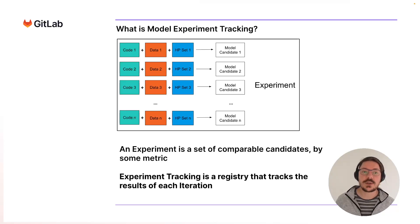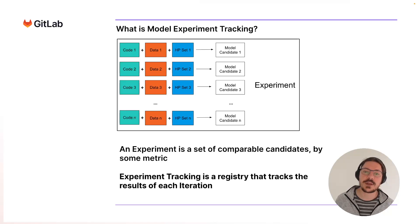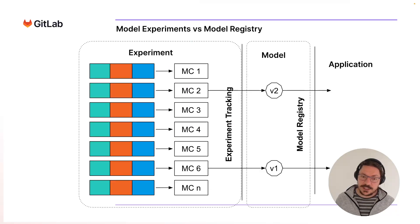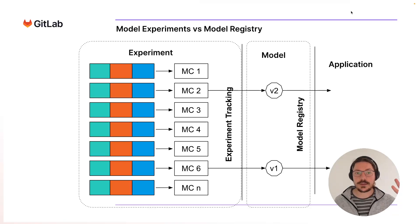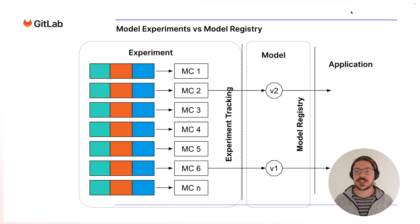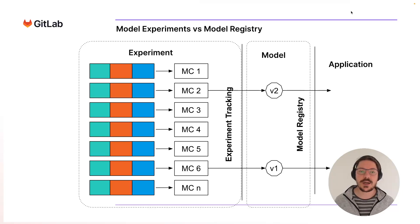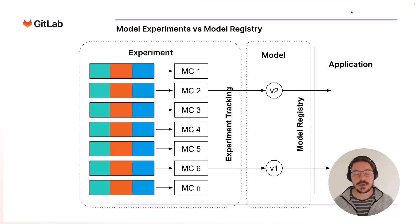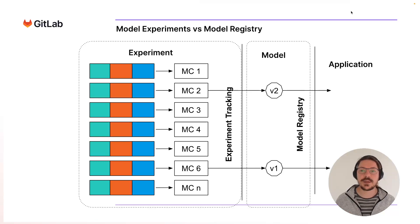Experiment tracking is a tool, a registry that tracks all of the candidates that were created so that we can compare them. It also tracks all of the artifacts created for each of the model candidates so that we can go back and trace the lineage later. Each model candidate is a candidate to become a model version. There's another component called the model registry that comes on the next step, which has versions exposed to the application. On the experiment tracking side, we measure model metrics like accuracy or AUC. Each candidate can become a model version eventually.